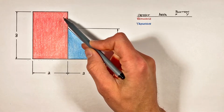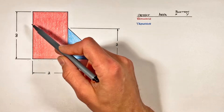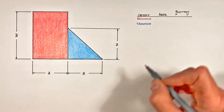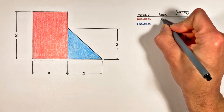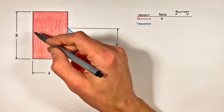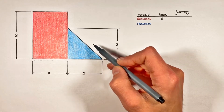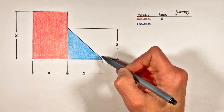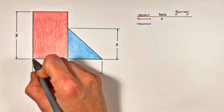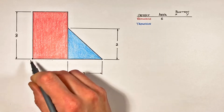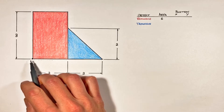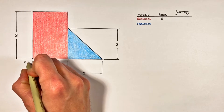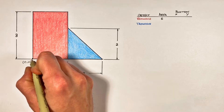Looking first at the block, we'll start with the area. Since it's a rectangle, the area is given by base multiplied by height, which gives us 6. Next is the position of the block. Anytime we're dealing with a centroid or center of gravity problem, we need a reference point. I typically choose the lower left corner of all the objects as the origin — zero horizontally and zero vertically.